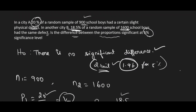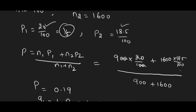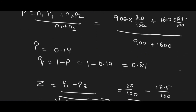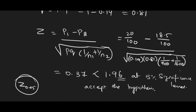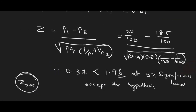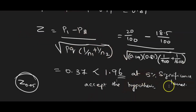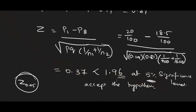Whenever there is a question about difference between proportions or difference between means, always go for a two-tailed test. Check what significance level is given in the question — here it was 5%, so we compared with 1.96. If no level is specified, compare at both 5% and 1%.